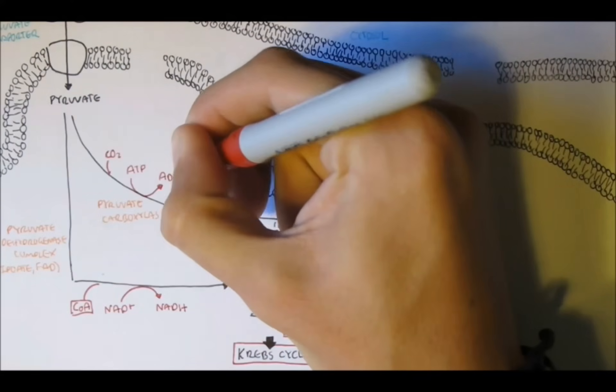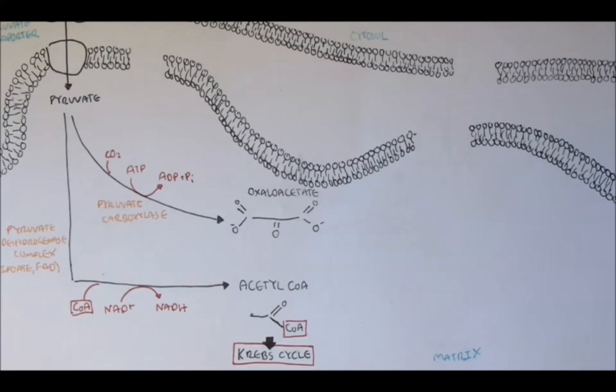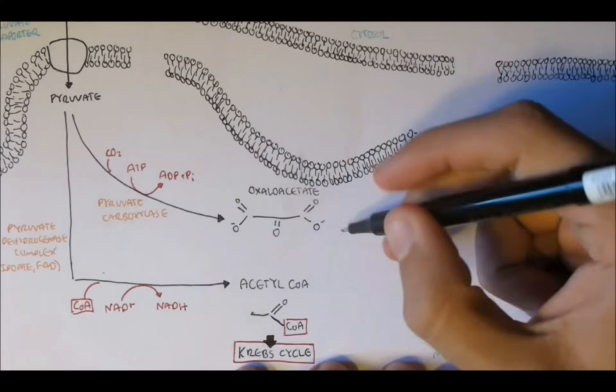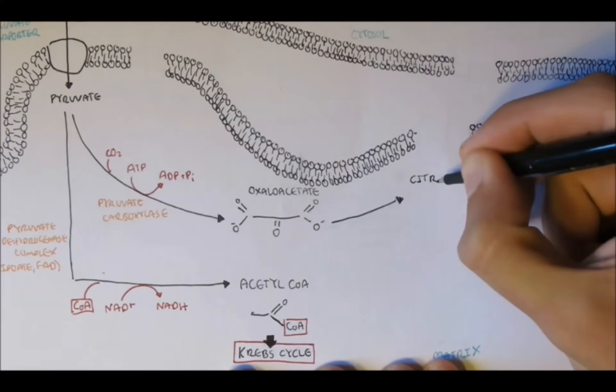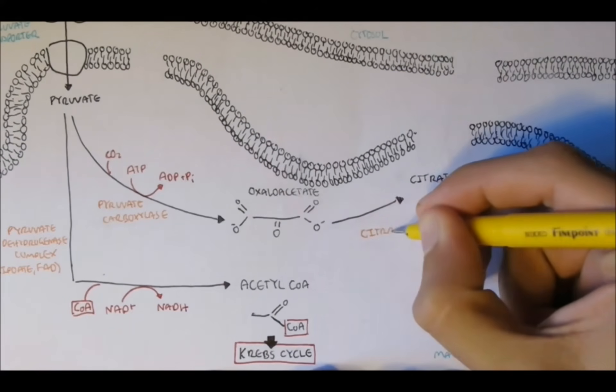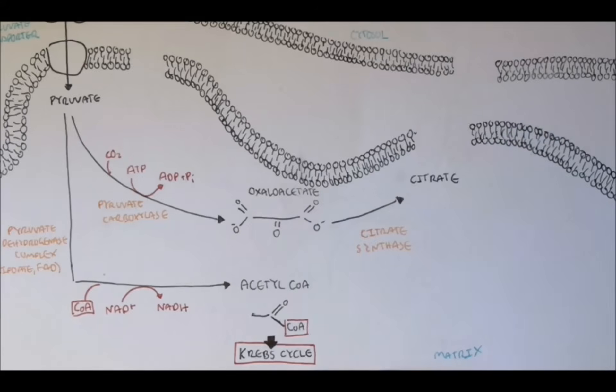And this is the same reaction for gluconeogenesis, when pyruvate has to convert to oxaloacetate first, before to phosphoenolpyruvate in the mitochondria for gluconeogenesis. Anyway, so now we have oxaloacetate. Now, acetyl-CoA will transfer its acetyl group to oxaloacetate, forming citrate by the enzyme citrate synthase.